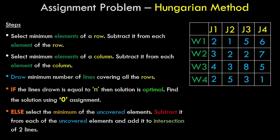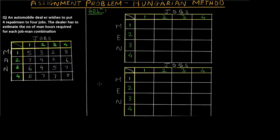Otherwise, we select the minimum uncovered element, subtract it from each uncovered element, and add it to the intersection of the two lines. It sounds confusing, but when we see the numerical you'll easily understand what is exactly happening. So let's go ahead and solve the numerical.